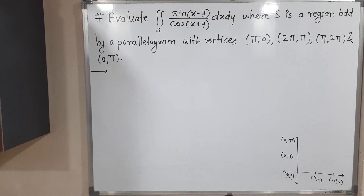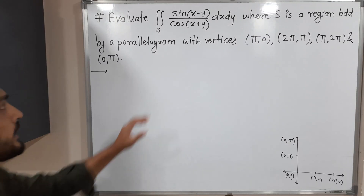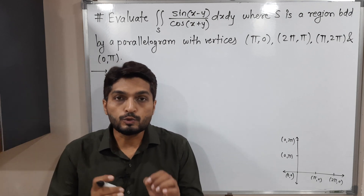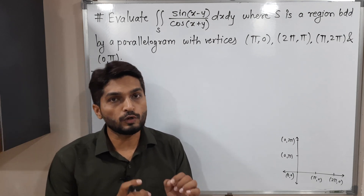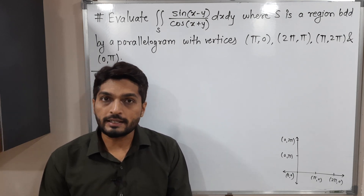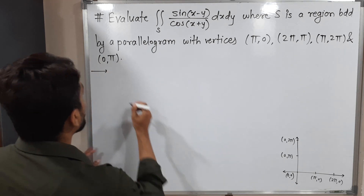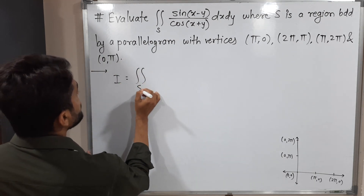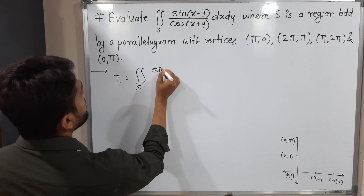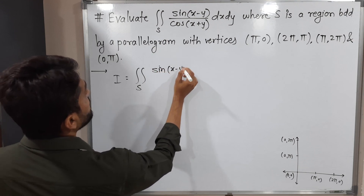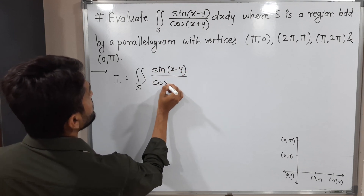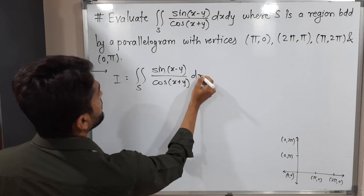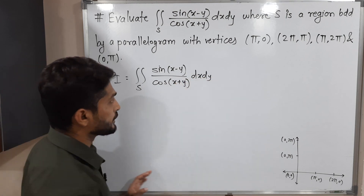Hi everyone. In this video we are going to solve this double integration with the help of a suitable change of variables. So let us write the given integral first. We have I equal to double integration over S of sine(x minus y) upon cos(x plus y) dx dy.